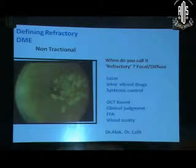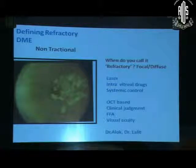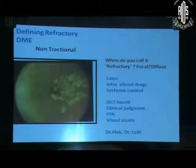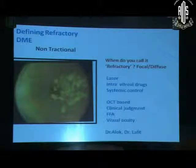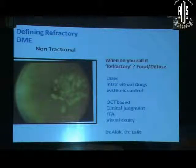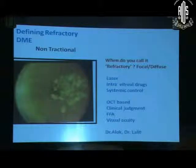There's no consensus. What we usually do: we get systemic control done, give three injections of Avastin followed by lasers. Systemic control for how long? Usually six weeks to start treatment. But to adequately control the pan-metabolic disorder of diabetes mellitus takes at least six months. Usually, to start a treatment we give six weeks of systemic control before we proceed.